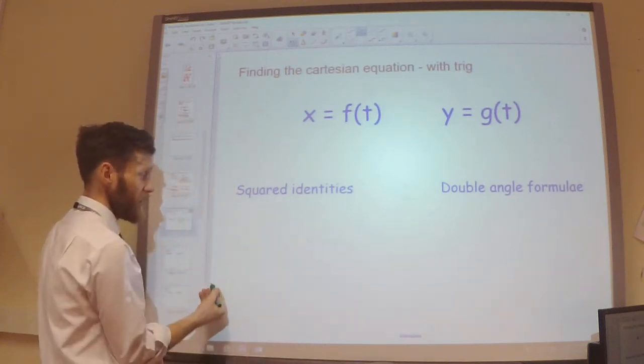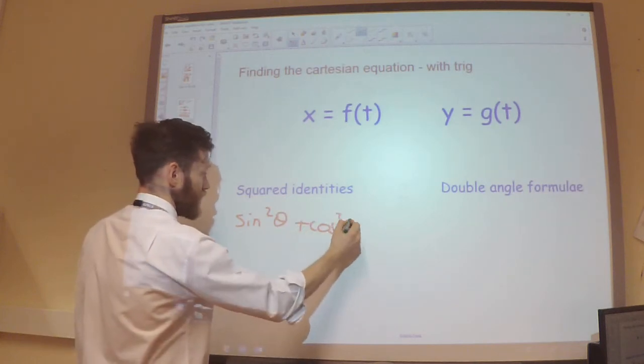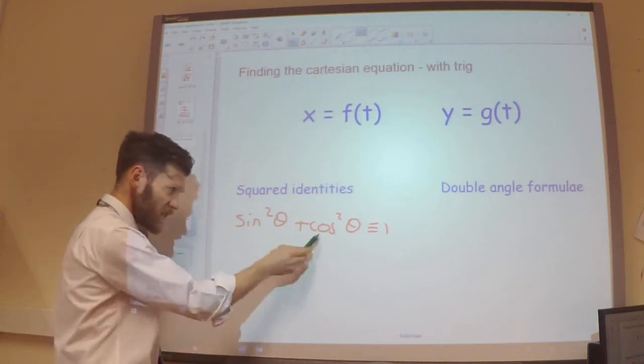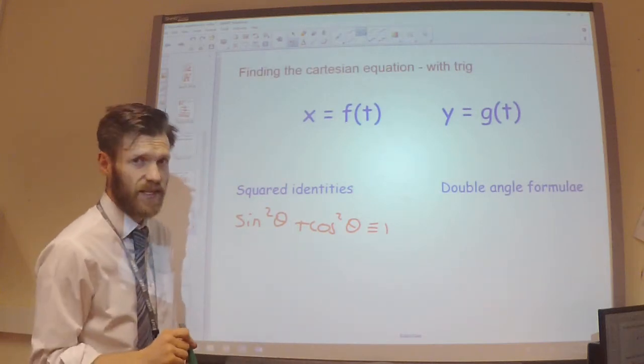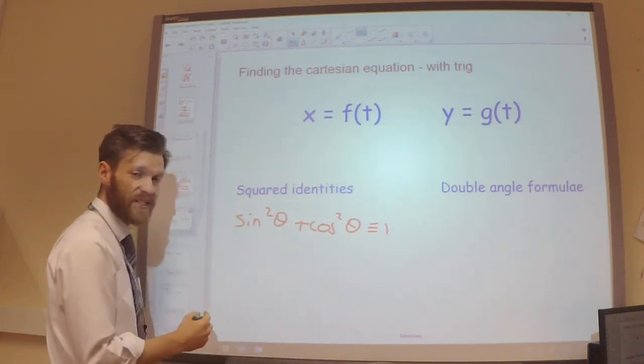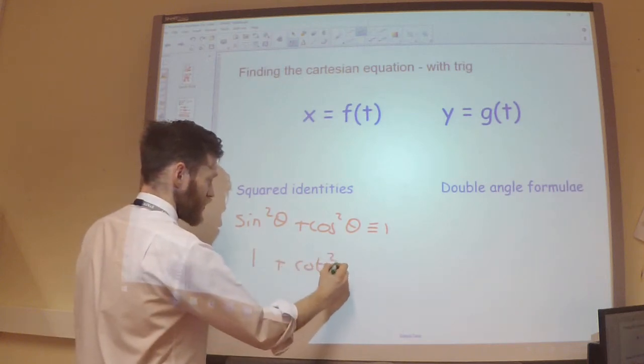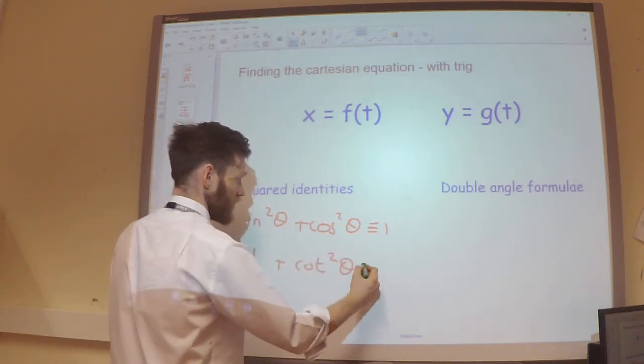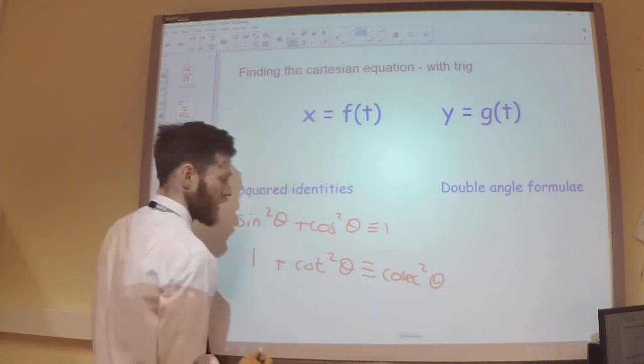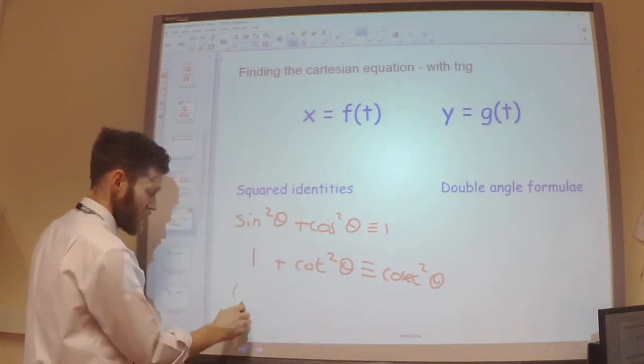So for example we know that sine squared plus cos squared is the same thing as 1. So this can help us link a sine and a cos together. We also know dividing each term here by sine squared, I know that 1 plus cot squared is equal to cosec squared.